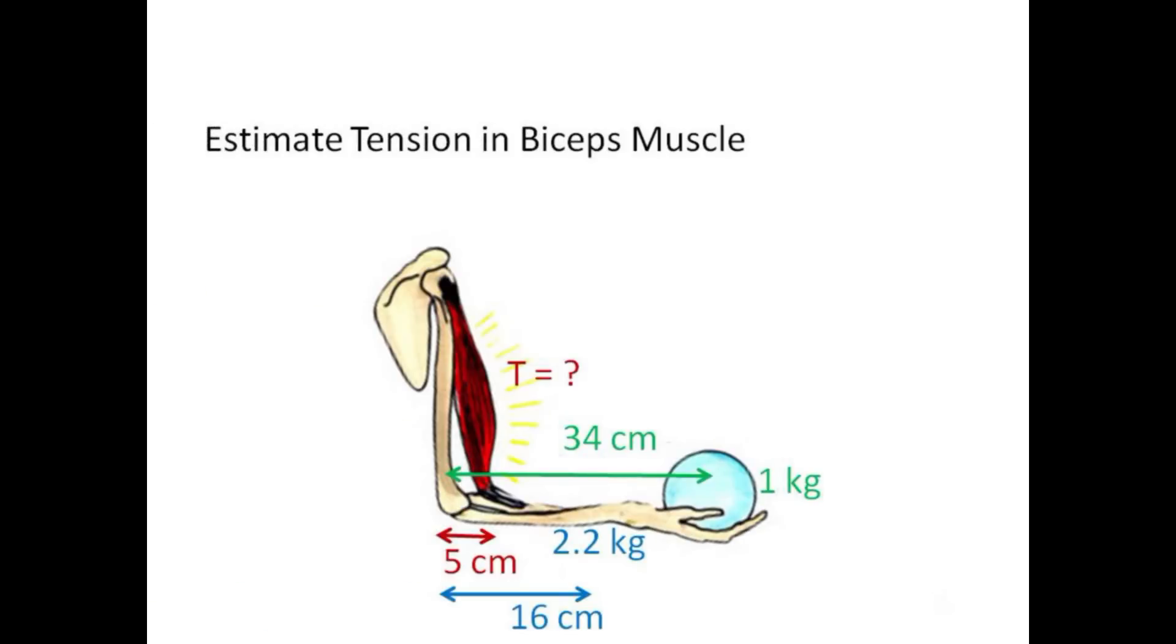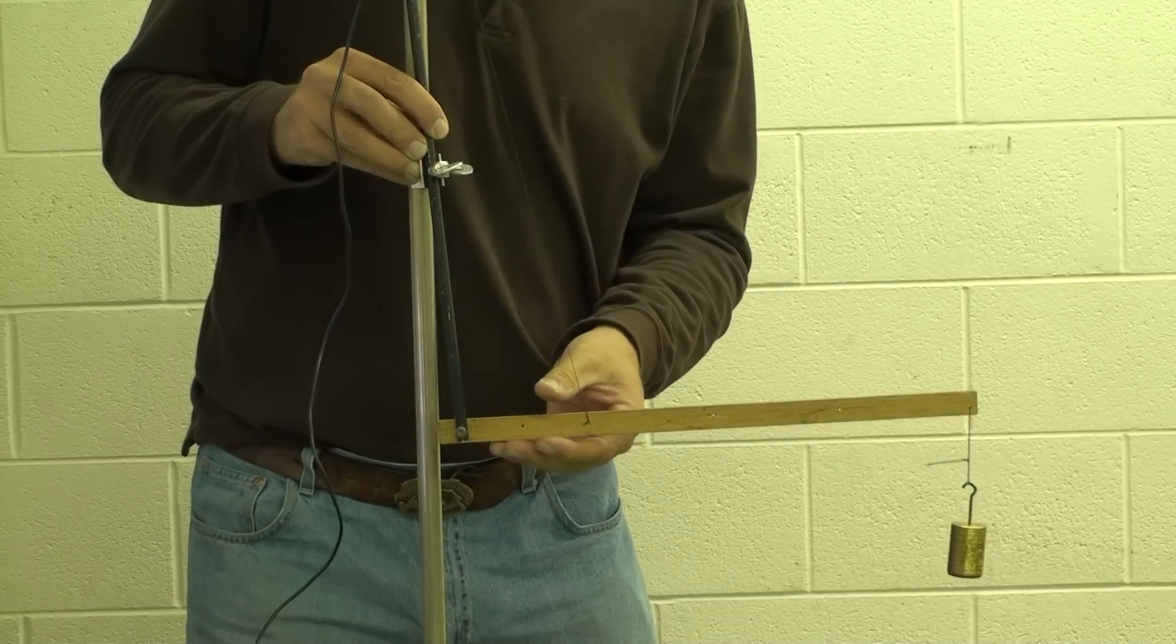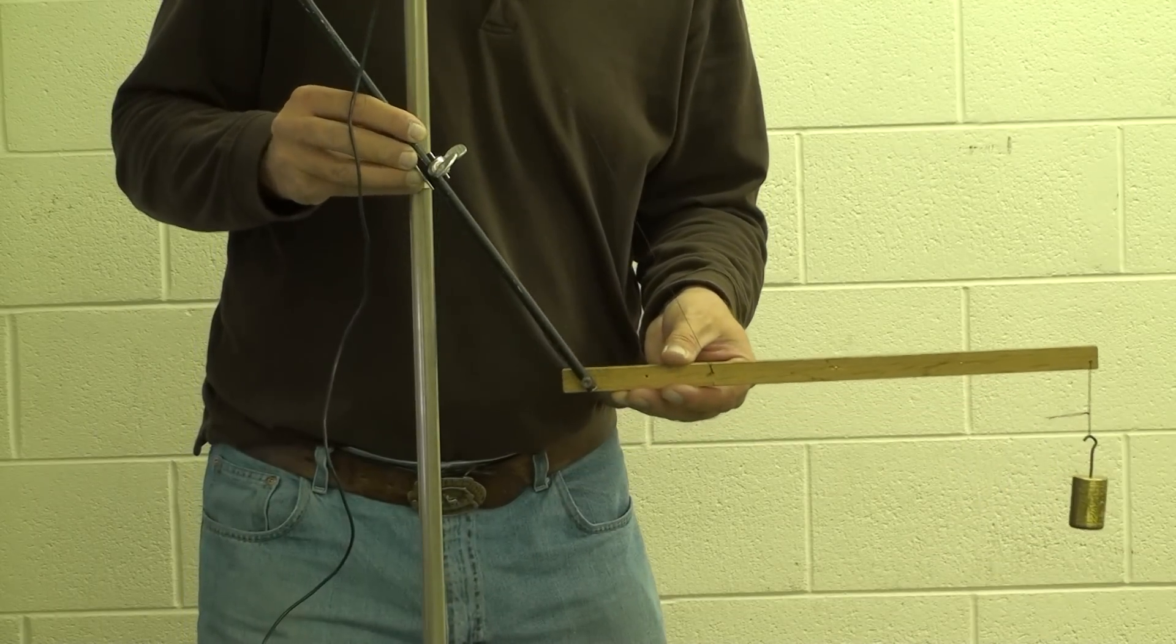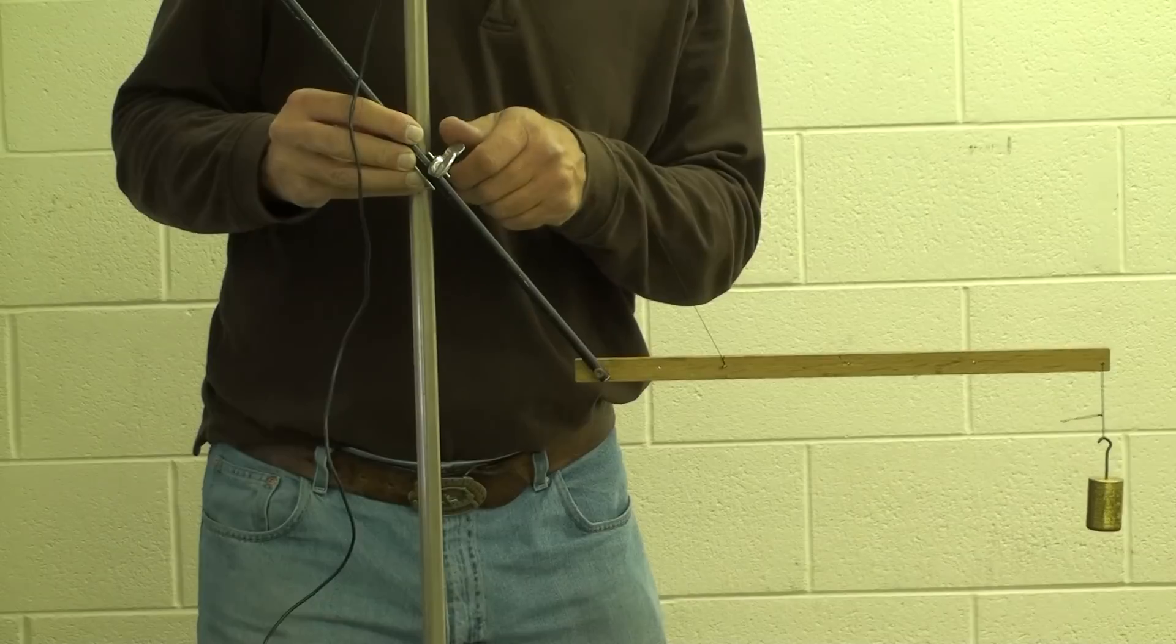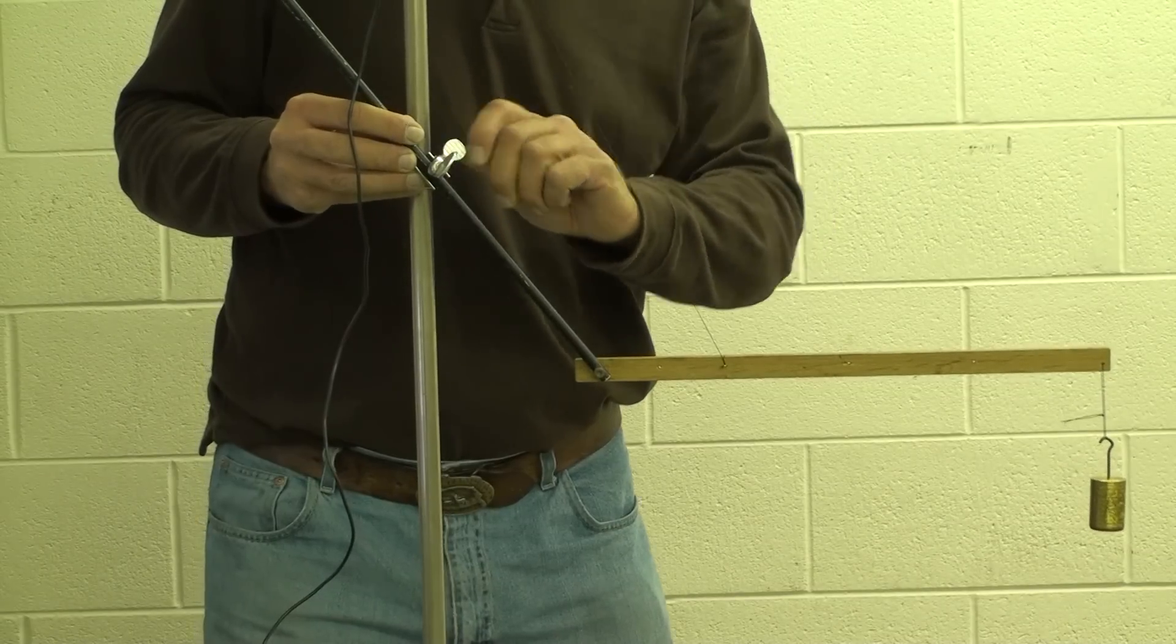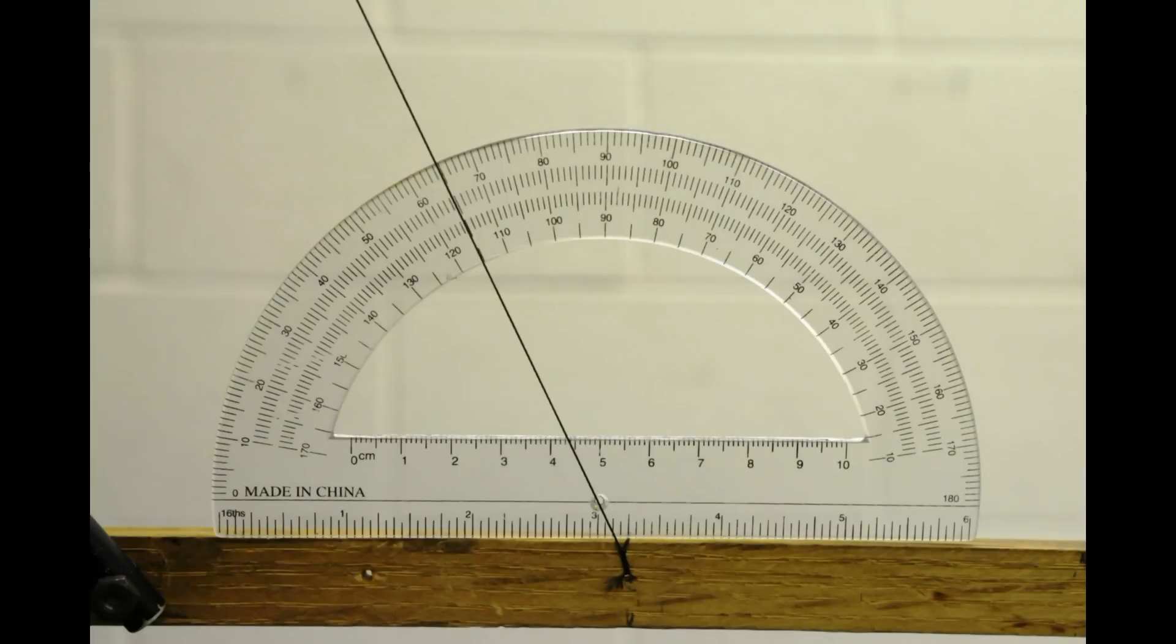Use the data shown and the same approach to estimate the tension in a real biceps muscle. Now angle the upper arm while keeping the forearm horizontal and repeat the experiment. The biceps muscle now acts at a lower angle so you might expect more tension to be needed.